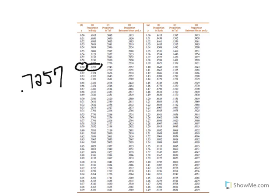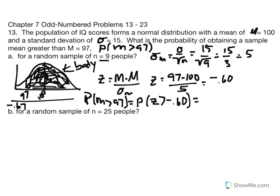The area in the body is 0.7257. So the proportion is 0.7257, which is the same as saying there's a 72.57% chance that if we randomly selected a sample of n equal to 9, the sample mean would be greater than 97 — in other words, individuals would have an average IQ greater than 97.